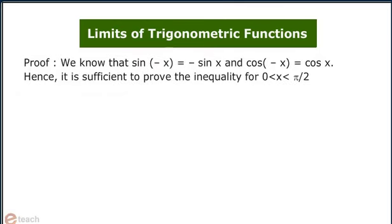Proof: We know that sin of minus x equals to minus sin x and cos of minus x equals to cos x. Hence it is sufficient to prove the inequality for x greater than 0 and less than π by 2.